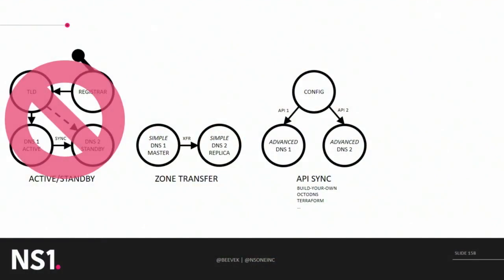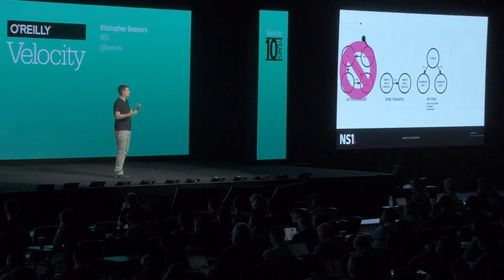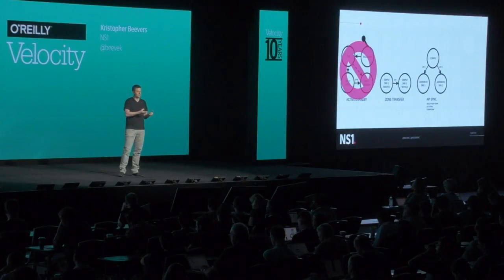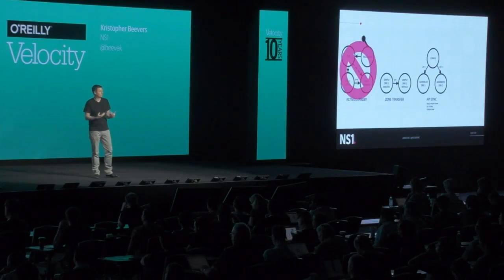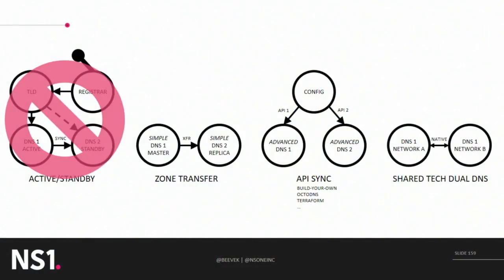Another setup that we're seeing emerge and become very prevalent is the idea of a normalized central configuration for your DNS setup. This is often important when customers are using more advanced features of modern DNS platforms — like traffic management or multi-CDN setups — because those features don't necessarily translate directly across something like zone transfer. Commonly, our customers will either build tools of their own to synchronize configs across the APIs of their providers, or use nice tools out there like OctoDNS from GitHub or Terraform from HashiCorp. And lastly, some DNS providers are capable of deploying their technology in redundant networks, sometimes dedicated to your use case, which gets rid of some of the feature parity and synchronization challenges.